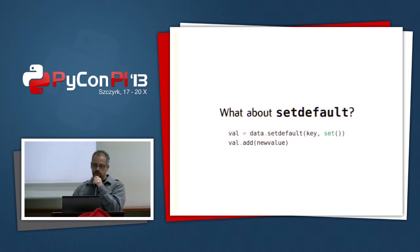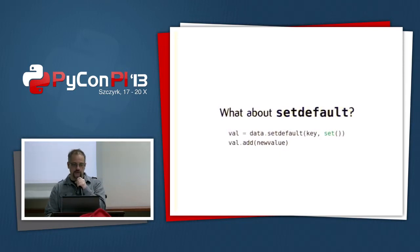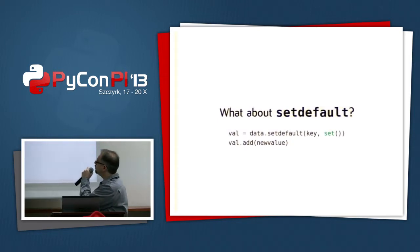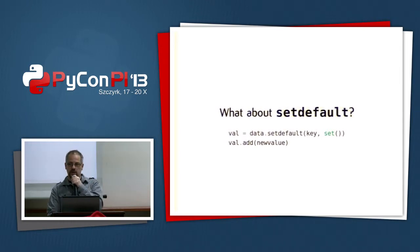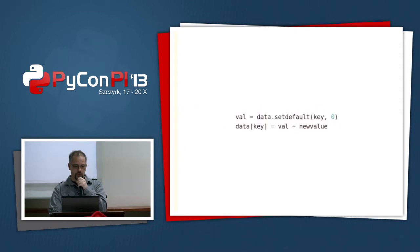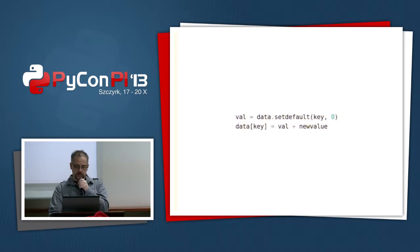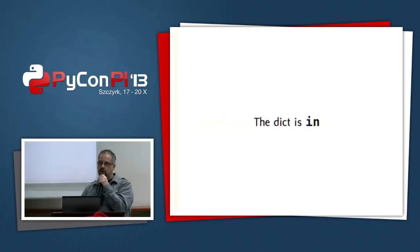What about setdefault? It existed before defaultdict. You can use setdefault, but it's misnamed — it sounds like it sets a default, but it doesn't. It gets something, and if that doesn't exist it sets a default. The naming is confusing. Also, more importantly, it will create a new set every time you call it, which is slow. It works fine for non-mutable cases like counters, but not for mutable objects.